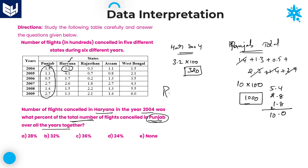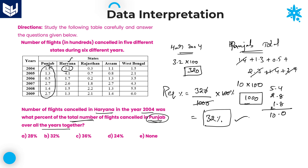Therefore, the required percentage to calculate is: 320 is what percent of 1000? Calculating percentage: 320 divided by 1000 into 100 — three zeros get cancelled — therefore the required percentage is 32 percent. 32 percent is the right answer, option B. Guys, I hope you enjoyed the session and understood all the problems which I have explained. Thank you. Thanks for watching.